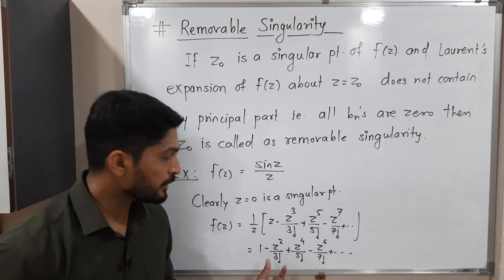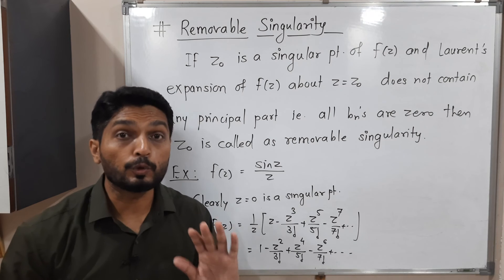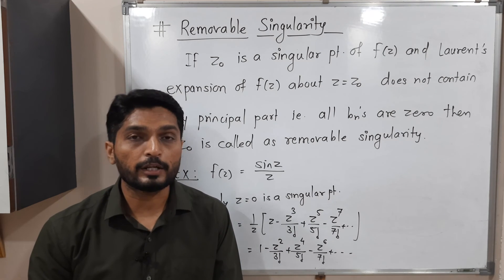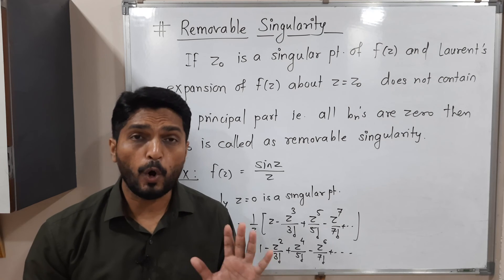See, this is a Laurent expansion, all z and its powers appears at numerator only. There is no any z in denominator. So that's why there is no principal part. All bn's are 0.